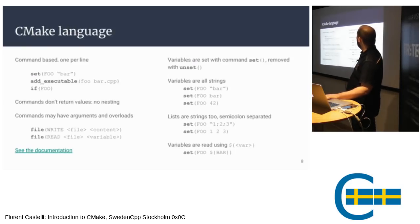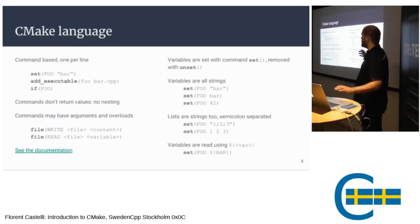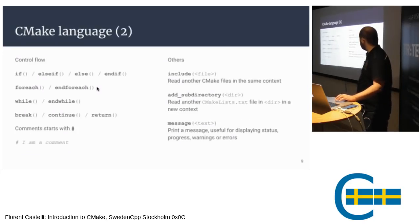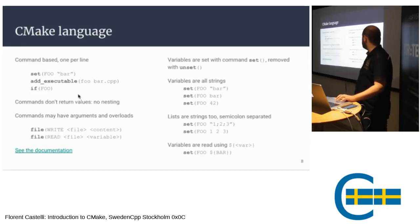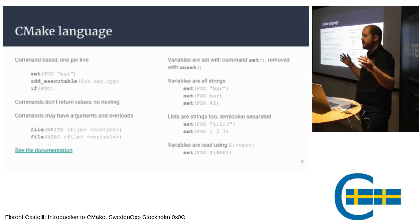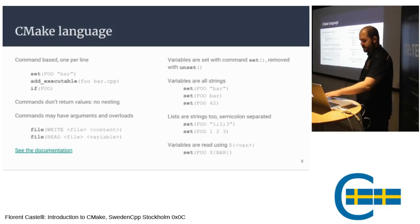The CMake language is command-based — one command per line. Examples include `set`, `add_executable`, and `if` — all commands with arguments. All those commands are procedures; they don't return values and you cannot nest them. You can't do a variable assignment and test it at the same time — one command per line, simple. Maybe too simple for some people, but at least it's easy to parse.